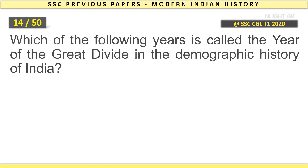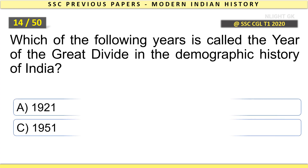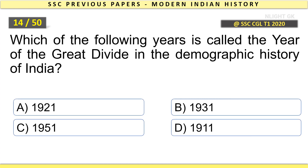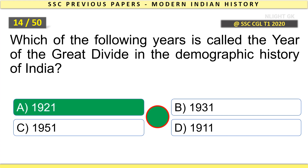Which of the following years is called the year of the Great Divide in the demographic history of India? 1921.